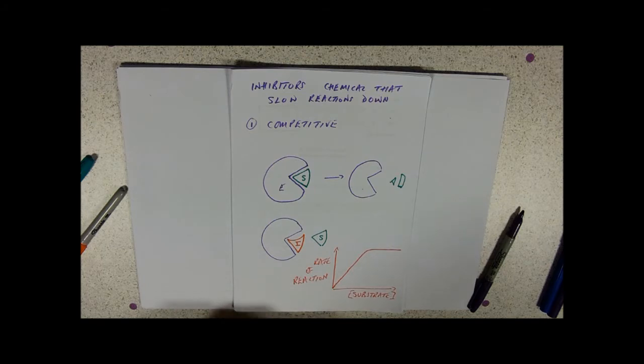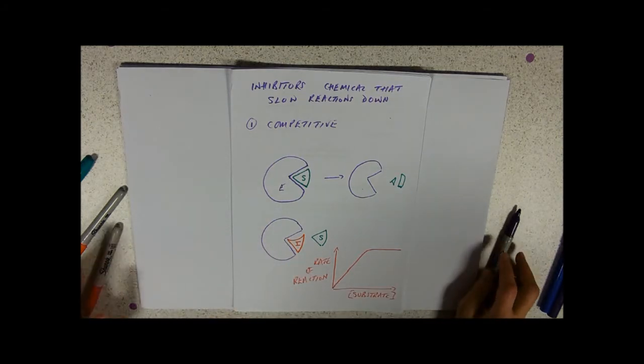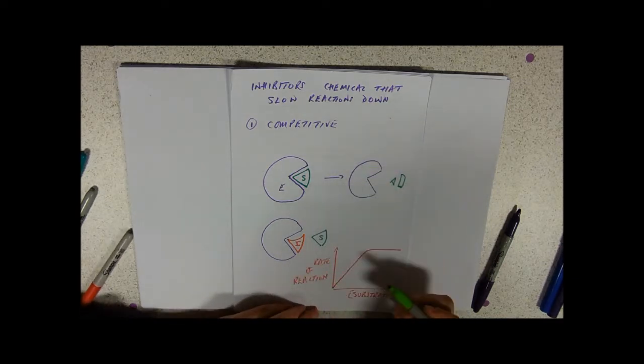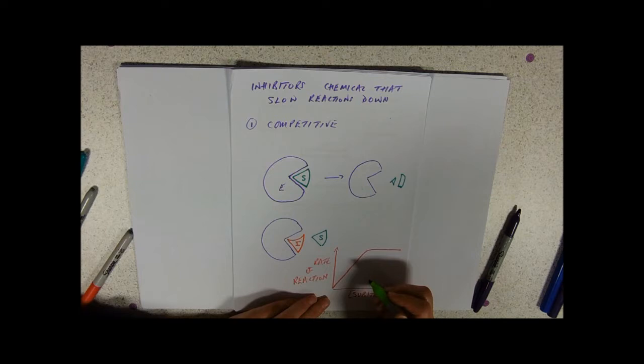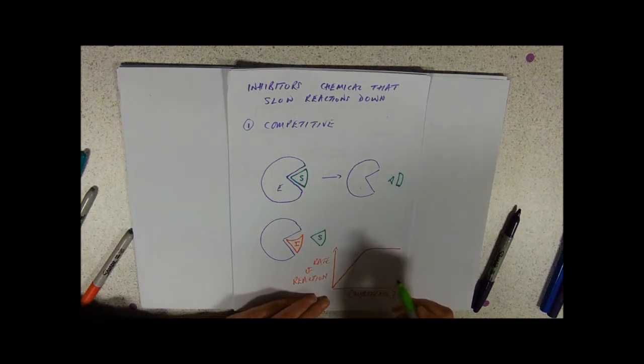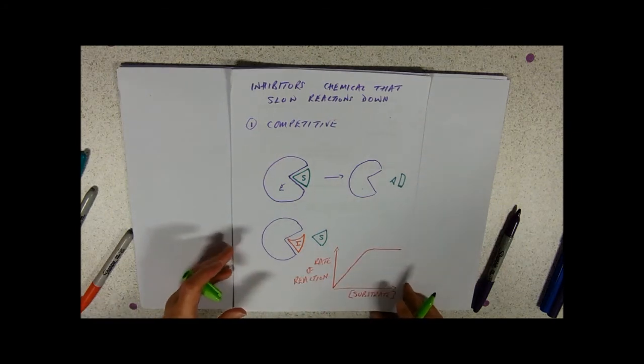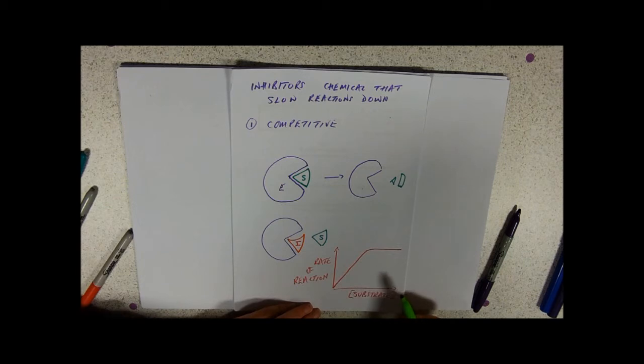If we put an inhibitor in, some of that enzyme might have the inhibitor in it. And if that happens, then the rate of reaction will be slowed down just because the inhibitor is sitting in the active site and the substrate can't get in. That will mean that at each substrate concentration there will be fewer of the enzyme substrate complexes.